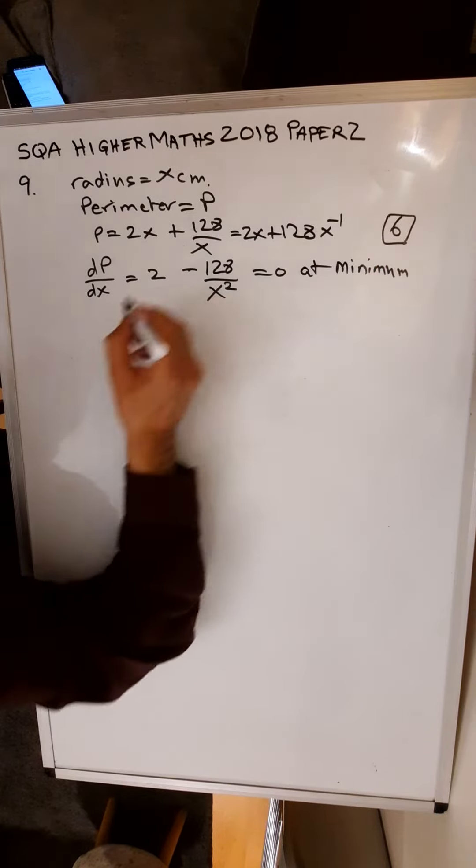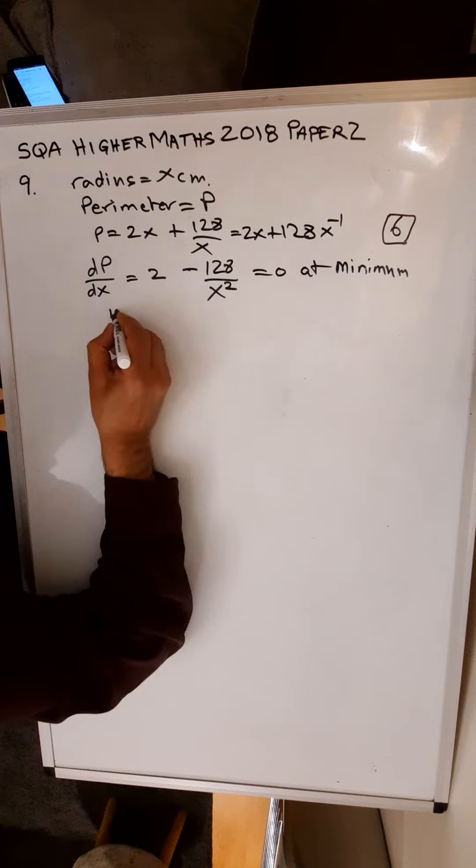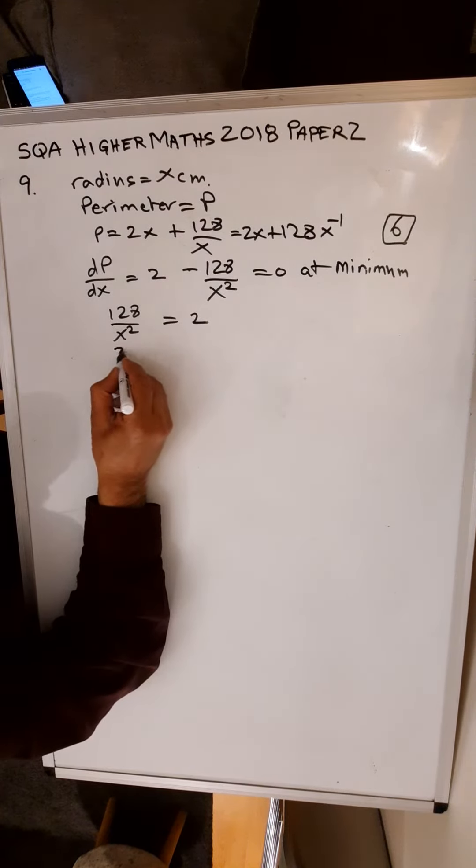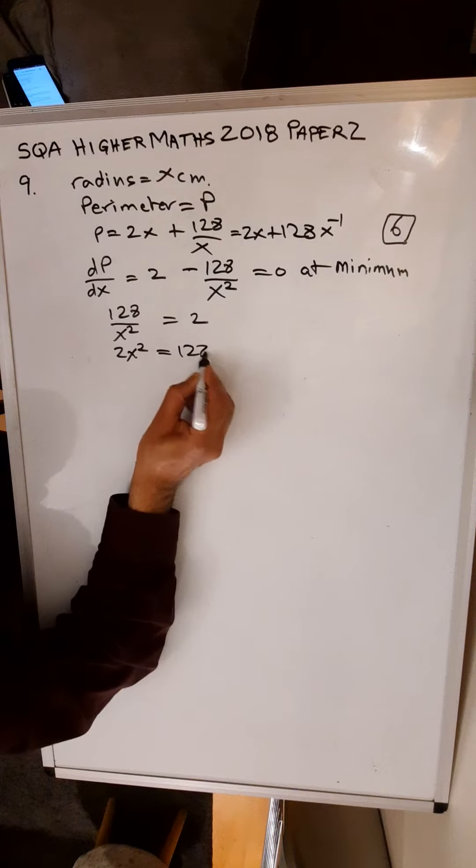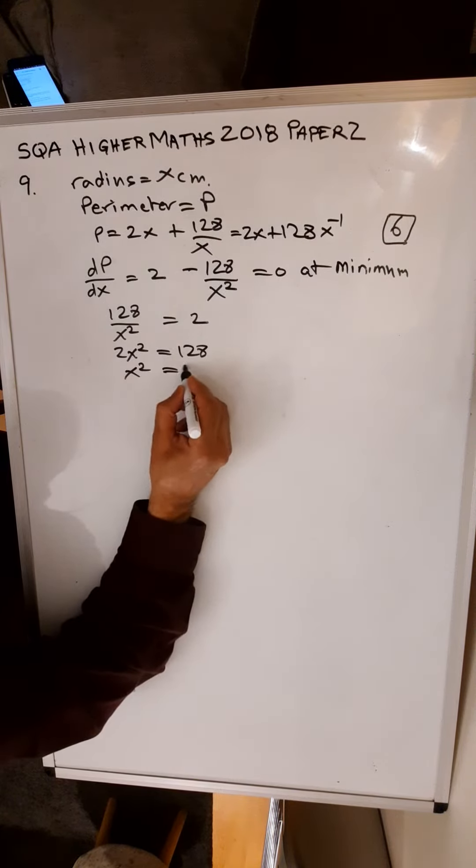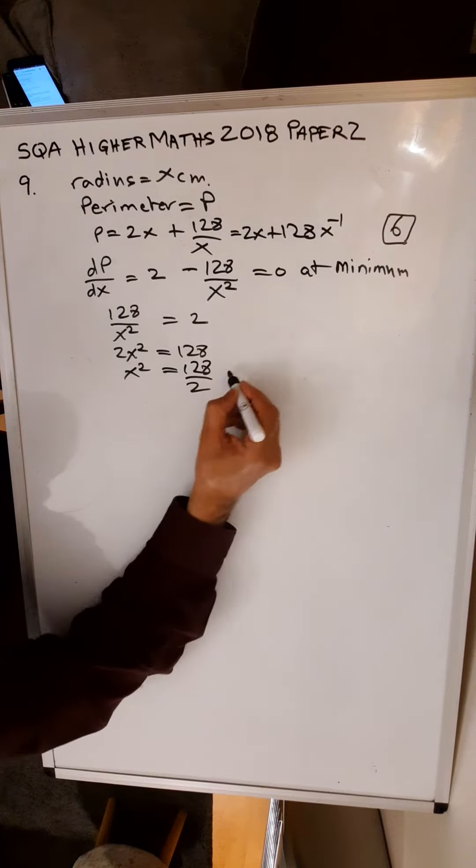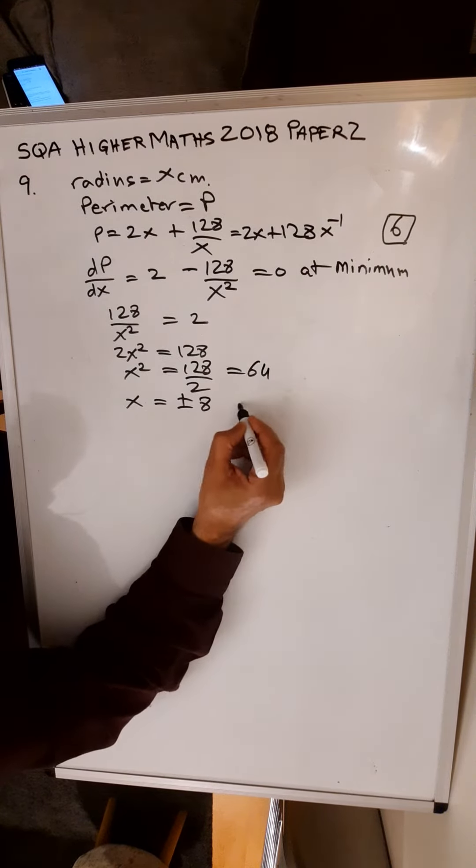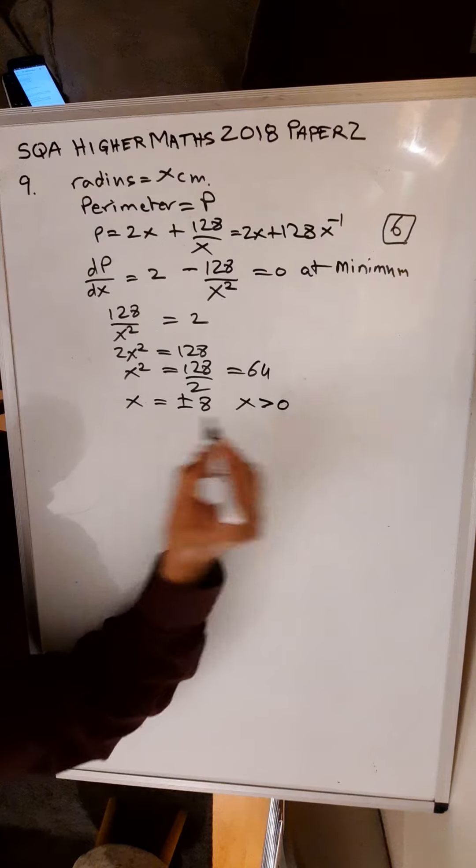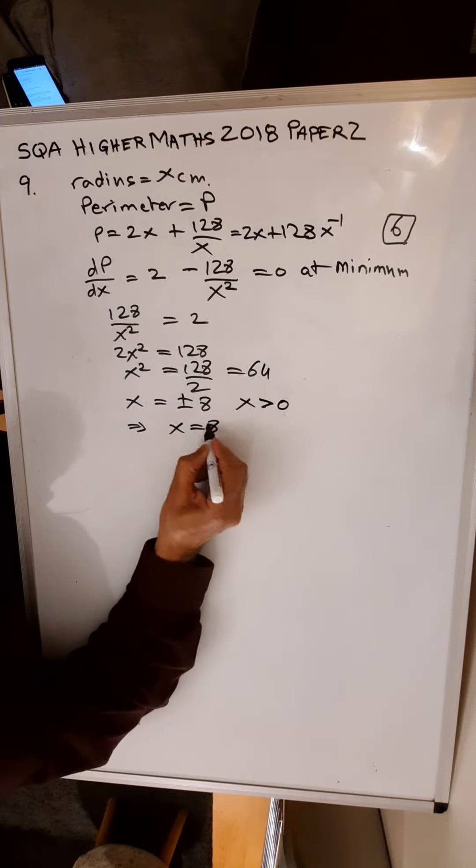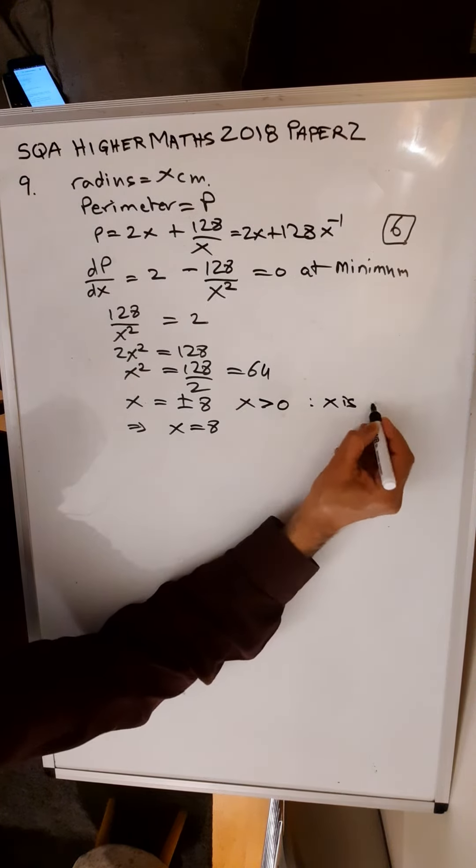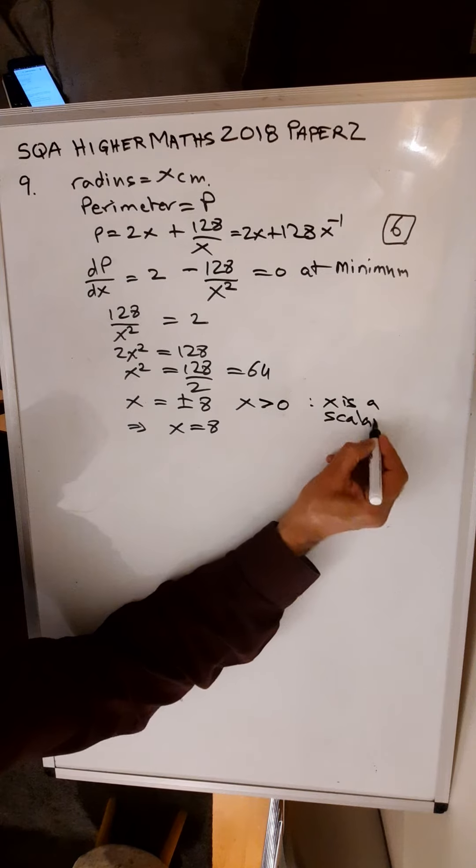Bring this to the other side, so 128 over x squared is equal to 2. Take the x squared to that side, so 2x squared is 128, x squared is 64. So x is plus or minus 8. X is a scalar, so it means it's greater than 0, so x equals 8 since x is a scalar quantity. You can't have a negative length.